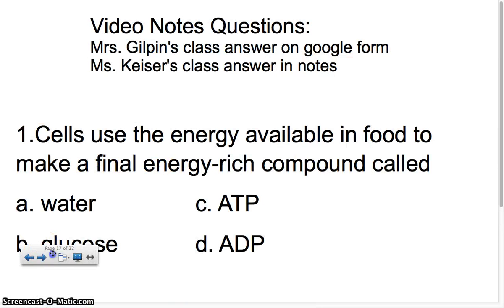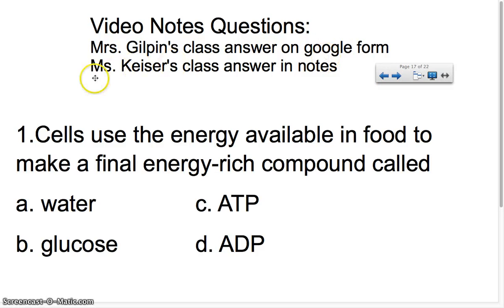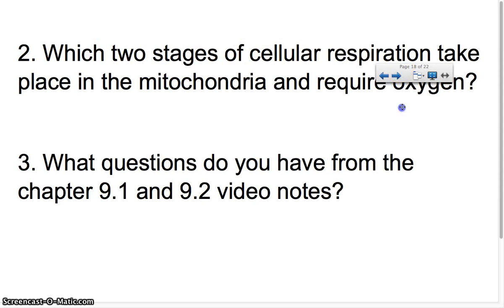Now that you've taken notes, here are a couple of things you need to do. If you're in Ms. Gilpin's class, answer these questions on the Google form. If you're in Ms. Kaiser's class, answer them in your notes. Question one: cells use energy available in food to make the final energy-rich compound called — water, glucose, ATP, or ADP? Question two: which two stages of cellular respiration take place in the mitochondria and require oxygen? And finally: what questions do you still have from chapter 9.1 and 9.2? Note that 9.2 will be discussed further in class the following day.